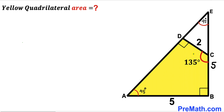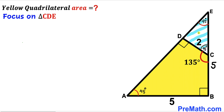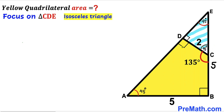Now let's focus on angle BCD, which is 135 degrees. Since the full straight angle is 180 degrees, the remaining angle DCE is 45 degrees. Looking at the small triangle CDE, angle CDE is 90 degrees. Since angles DCE and DEC are both 45 degrees, triangle CDE is also isosceles, meaning CD equals DE. Since CD is 2 units, DE is also 2 units.